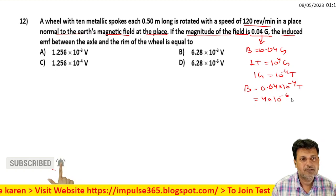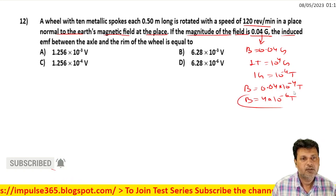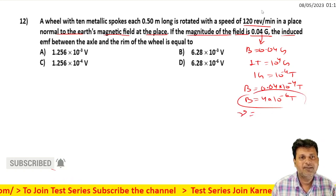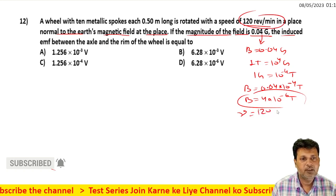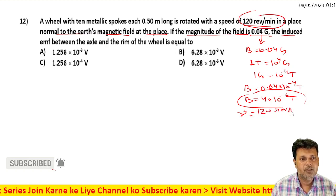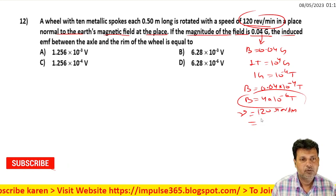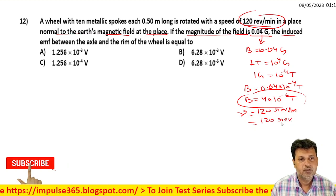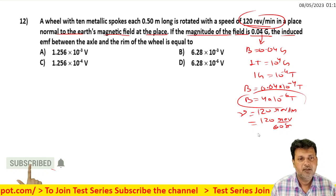This is equal to 4 into 10 to the power minus 6 tesla. Now, the frequency is given. The frequency is 120 revolutions per one minute.